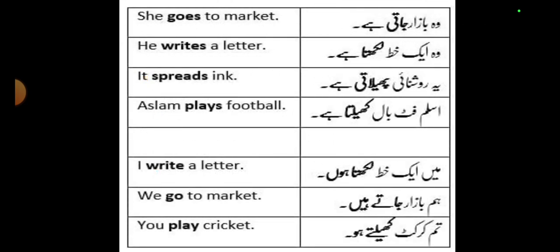Now, how can we identify this tense through Urdu sentences? The identification of this tense is that Urdu sentences end with words like 'ta hai,' 'ti hai,' 'te hai.' For example: 'Woh bazaar jati hai' — she goes to market. 'He writes a letter.' 'It spreads ink.' You can go through the other sentences on the slide; it will help you understand how sentences in this tense are written in both Urdu and English.